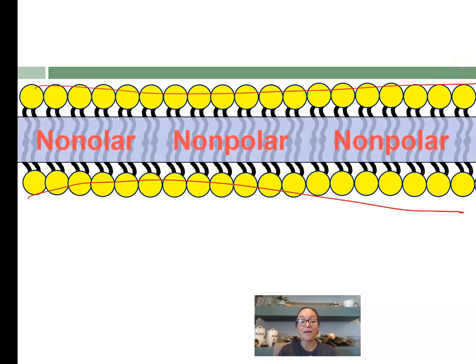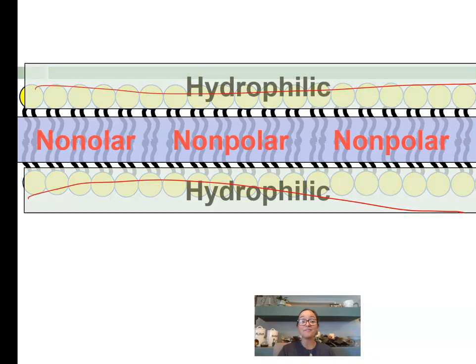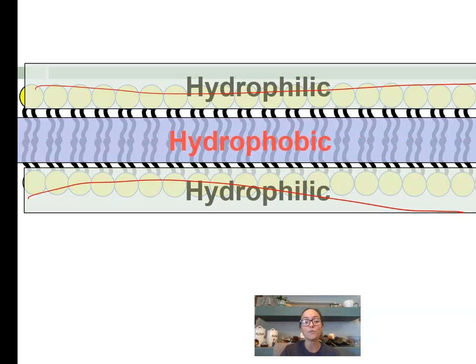When we look at our cell membrane, you have a whole region that is nonpolar and then a part that is polar and water-loving. We call that water-loving part hydrophilic and the center part hydrophobic. That is our cell membrane.